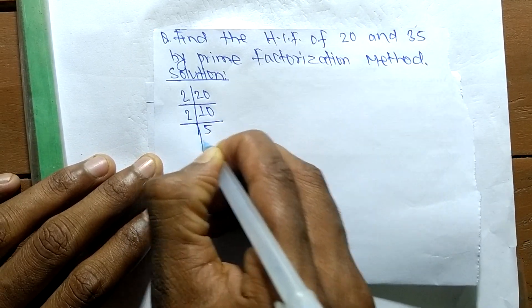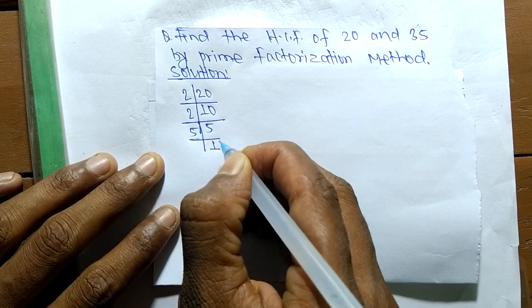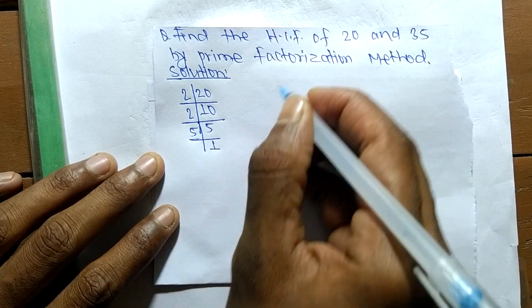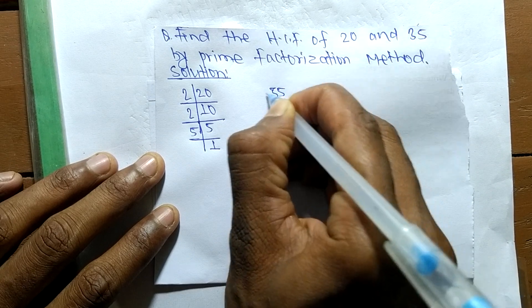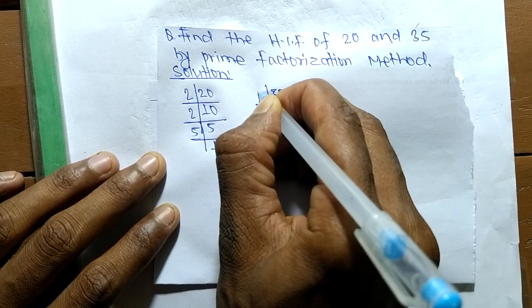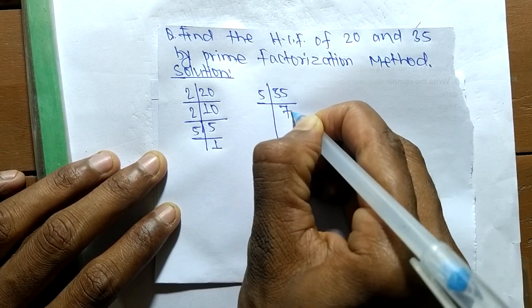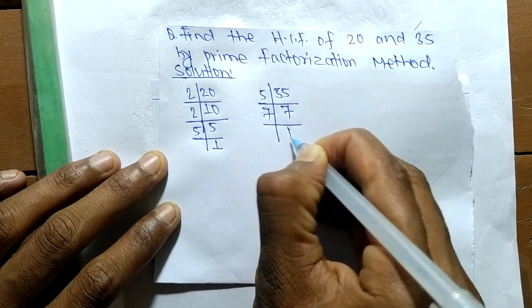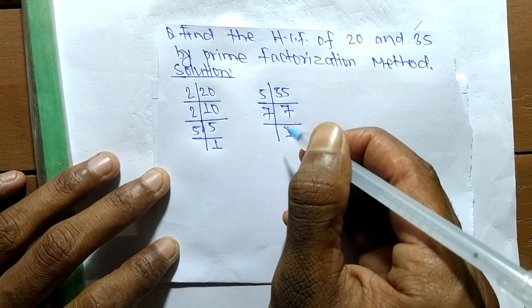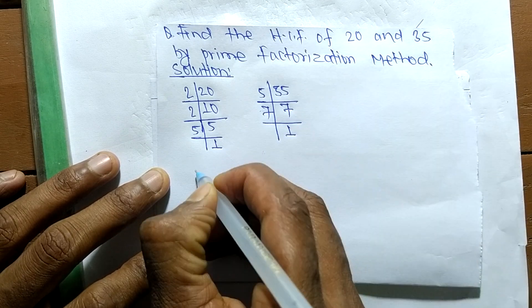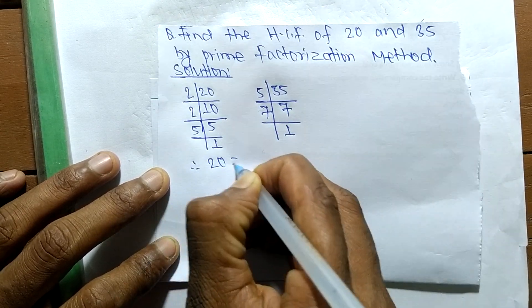...and 5 times 1 equals 5. Now for the prime factors of 35, it is 5 times 7 equals 35, and 7 times 1 equals 7. From these prime factors, we can write that 20 is...